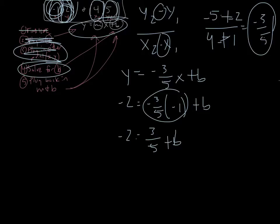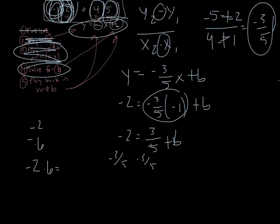I've got to get b by itself, so I need to get rid of 3 over 5. Let's do negative 2 minus 3 over 5. I personally don't enjoy dealing with fractions, so I'm going to turn that into 0.6 — so it'll be negative 2 minus 0.6, which gives a bigger negative: negative 2.6 equals b.